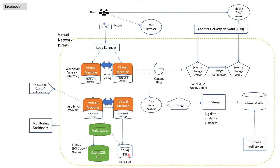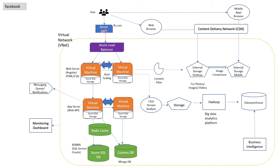For NoSQL, Azure recommends Cosmos DB, but other databases like MongoDB can also be used here. The load balancer equivalent in Azure cloud is Azure Load Balancer, which will manage and divide the website traffic between different servers. Then the DNS equivalent service is Azure DNS, which will manage domain names like fb.com and do the mapping with the IP addresses of the servers.